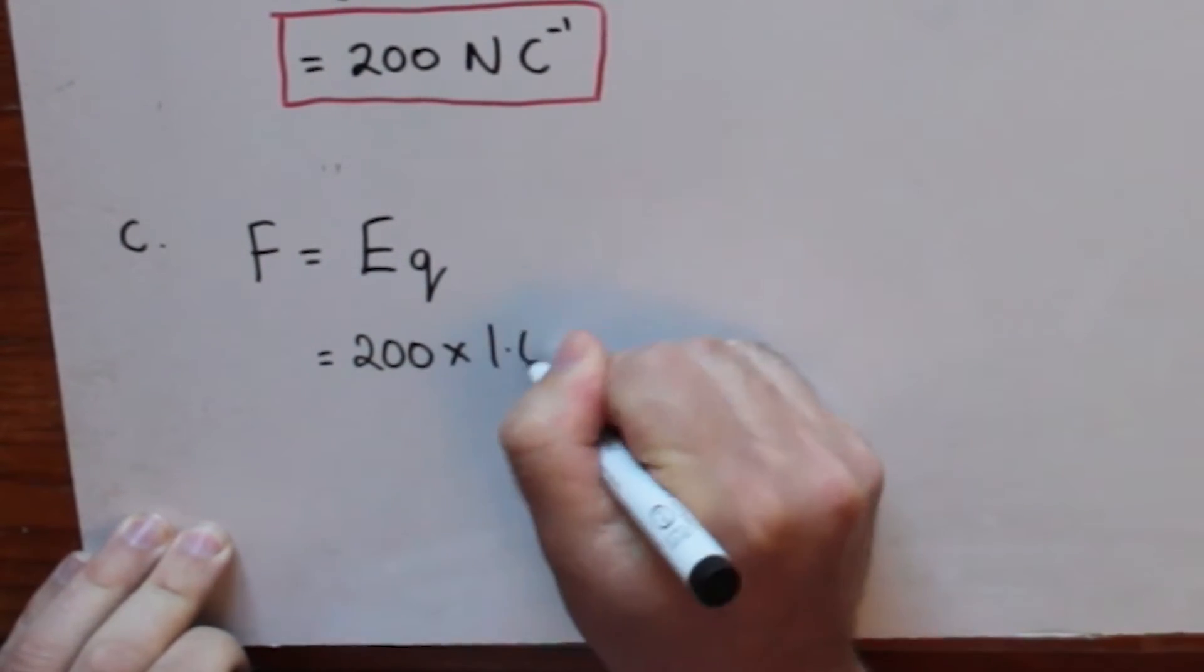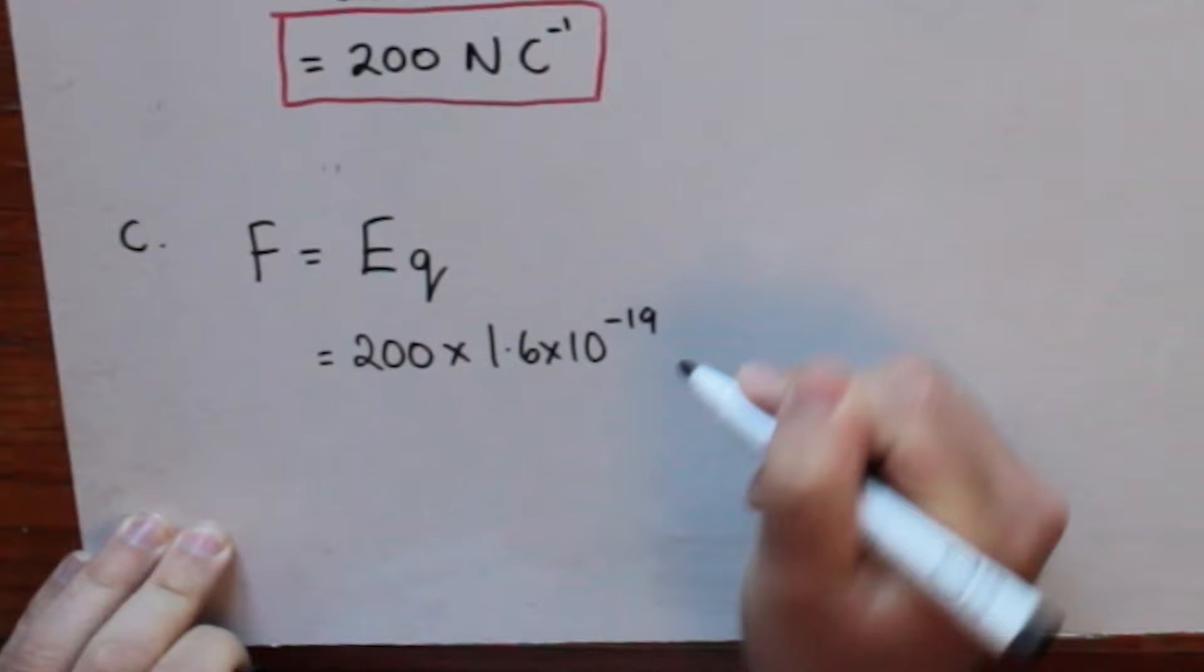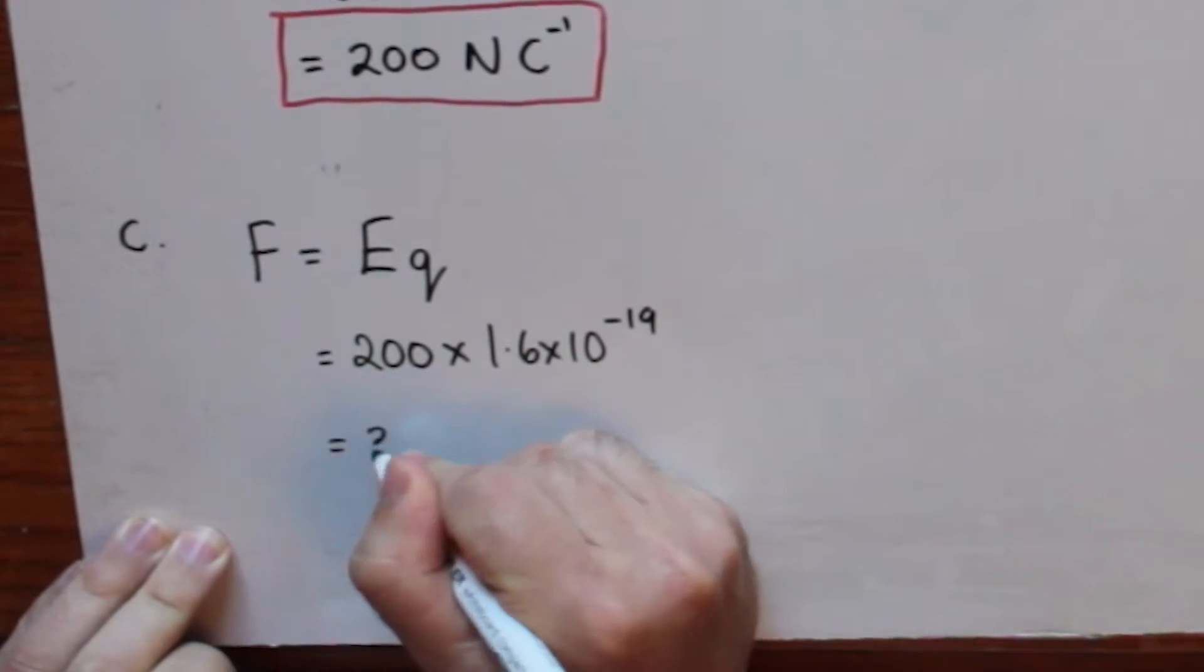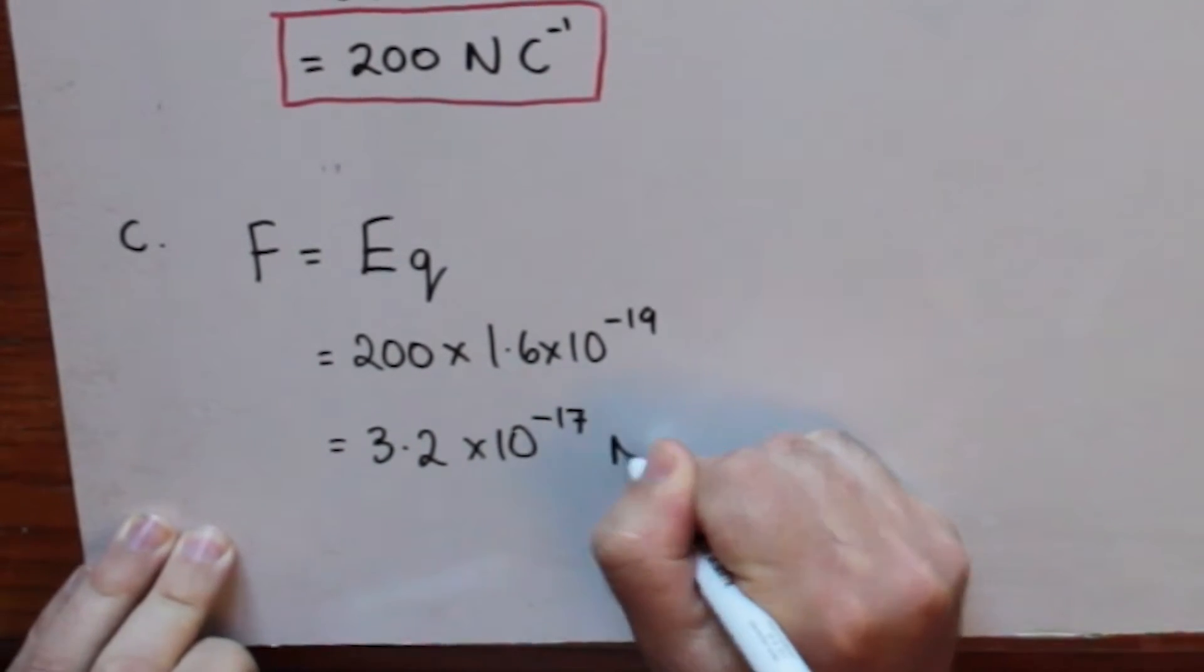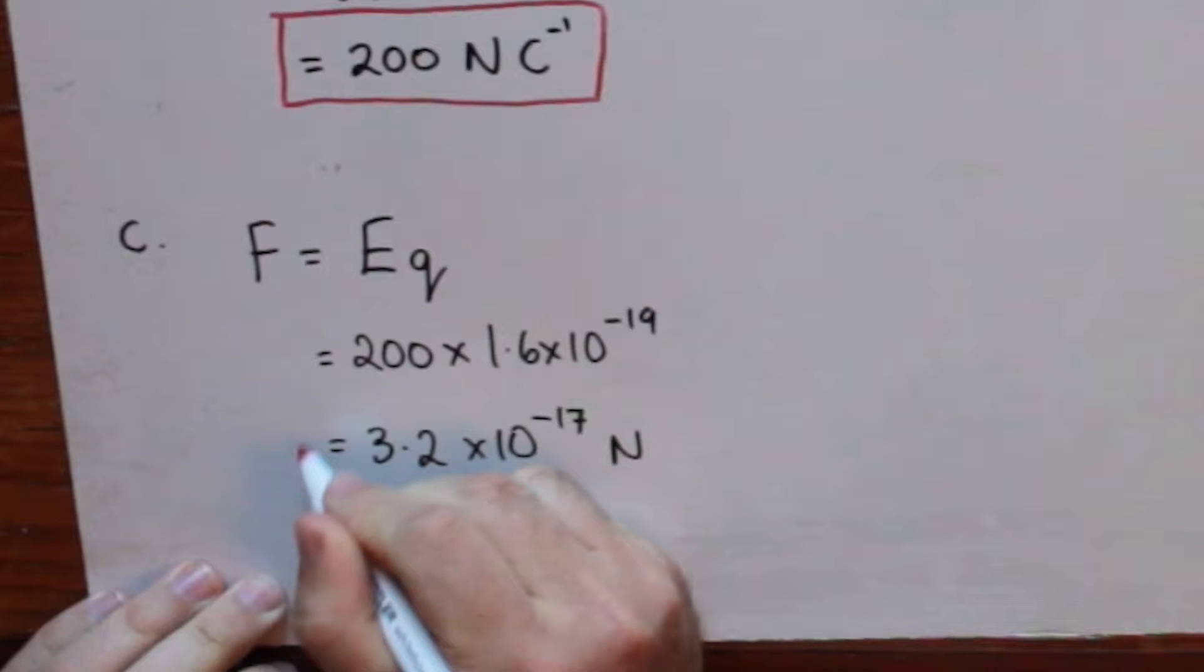Since the magnitude of the charge on the electron is 1.6 times 10 to the negative 19 coulombs, we then multiply that by the field of 200 newtons per coulomb. The force is 3.2 times 10 to the negative 17 newtons.